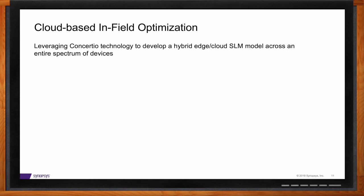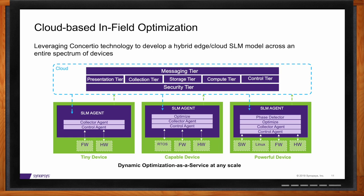One challenge of an SLM agent is that it requires a certain amount of compute power, which may or may not be available depending on the system. So we're architecting a hybrid solution. Looking at this graphic, depending on the end system — from a tiny IoT device all the way up to a car — we can place certain aspects of edge analytics in the system itself, ranging from just collecting data to doing full analysis locally. Anything we cannot do in the target system we can do in the cloud, complementing the device's capabilities with big data analytics. Concert.io's technology is very modular, allowing this kind of hybrid optimization-as-a-service approach.